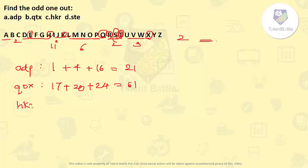Then third one HKR. So it is 8 plus 11 plus 18 for HKR. So it will be 37. And last STE: for STE we are having 19 plus 20 plus 5, so that is 44.